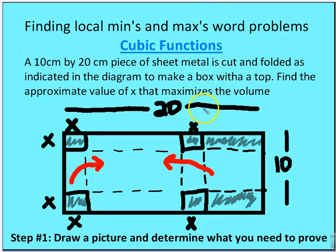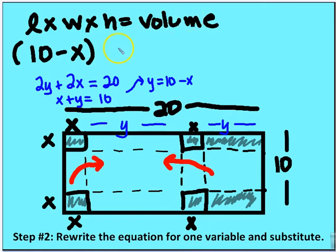Let's move on to the second problem. A 10 centimeter by 20 centimeter piece of sheet metal is cut and folded as indicated to make a box with a top. So in the prior example, we had no top for a box, and now we are going to have a box that has a top. We want to figure out the value of x that maximizes the volume. Again, we know that length times width times height is equal to the volume.